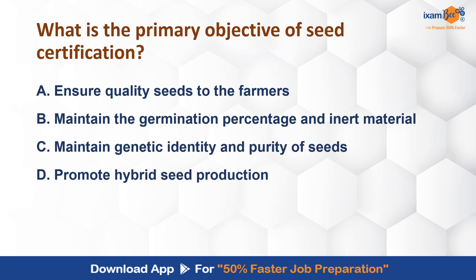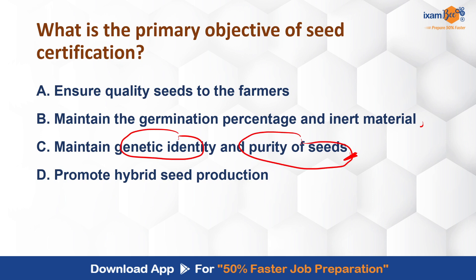What is the primary objective of seed certification? The primary objective is to maintain the genetic identity and purity of seeds. Germination percentage and inert material are also objectives, but prior to those, genetic identity and genetic purity are the primary concern. All three options — genetic identity/purity, germination percentage, and inert material — are objectives of seed certification, but you need to identify which is the primary one. Tell me in the chat box how many of you got this answer correctly.